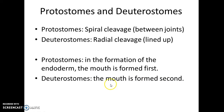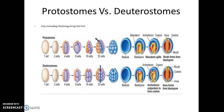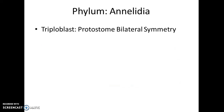In deuterostomes, the mouth is formed second, and the mesoderm is from the endoderm. If you need to hit pause so that you can get this picture. In Phylum Annelida, there are triploblasts, but they are protostomes. That implies that they are coelomates, and they have bilateral symmetry. You will go down and fill in the information for annelids — we'll probably do this in class.